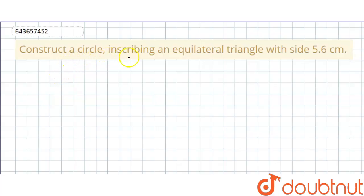The question says construct a circle inscribing an equilateral triangle with side 5.6 cm. So we have to draw an equilateral triangle whose side length is given as 5.6 cm and construct a circle that inscribes this triangle.